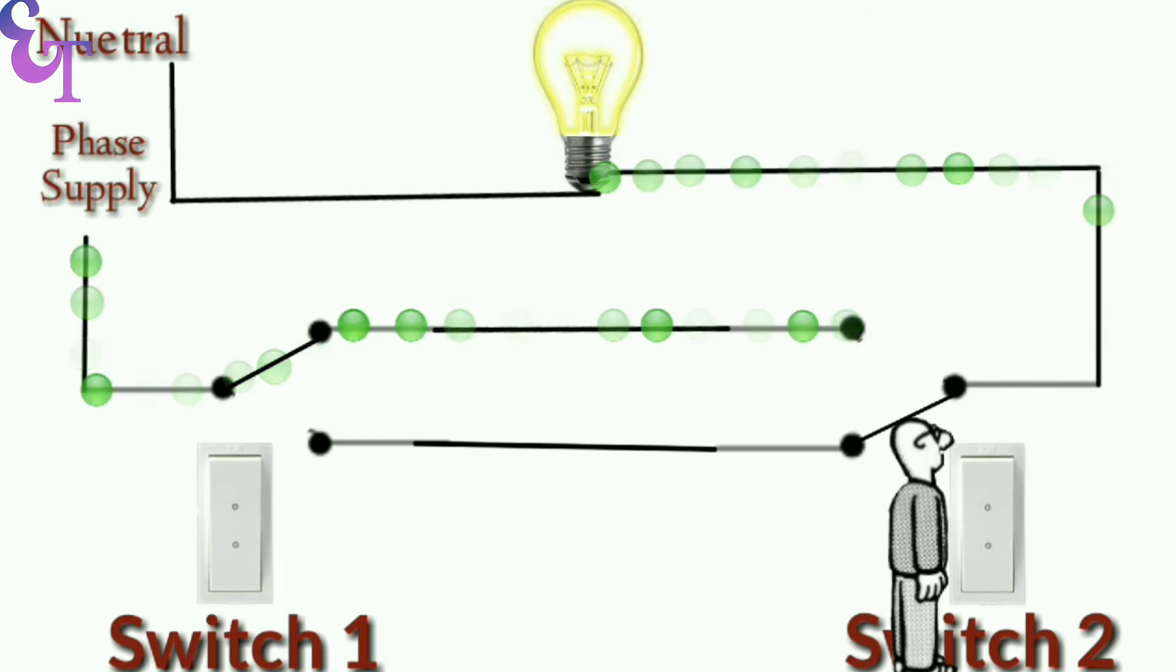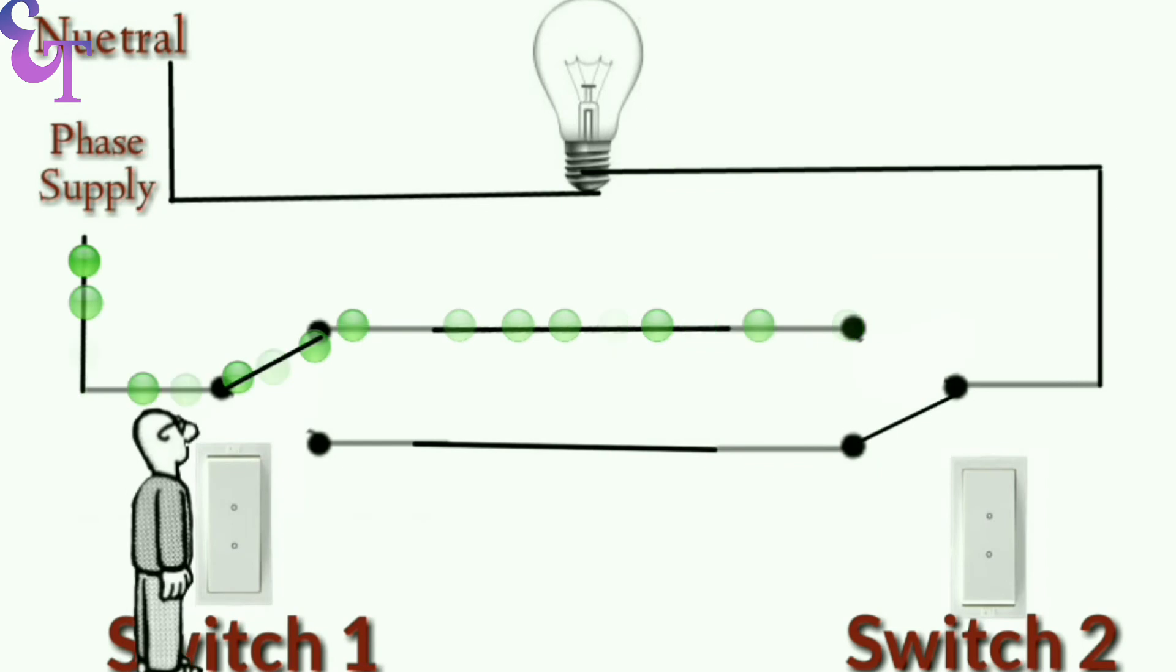Now if we press switch two, the bulb will turn off. After switching off the bulb with switch two, if someone presses switch one or two, the bulb will turn on again.